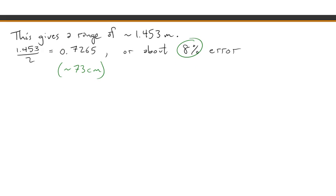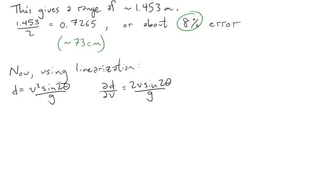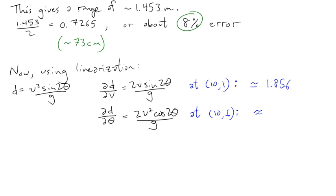Now let's look at what we get if we use the linearization. So, to use the linearization, we'll have to calculate partial derivatives of d. There's the formula for d again. Let's take the partial derivative of d with respect to v. Here's what we get. And evaluate it at the point 10 and 1. We get roughly 1.856. Similarly, take the partial with respect to theta. Evaluate at 10 and 1. And here you get minus 8.493.